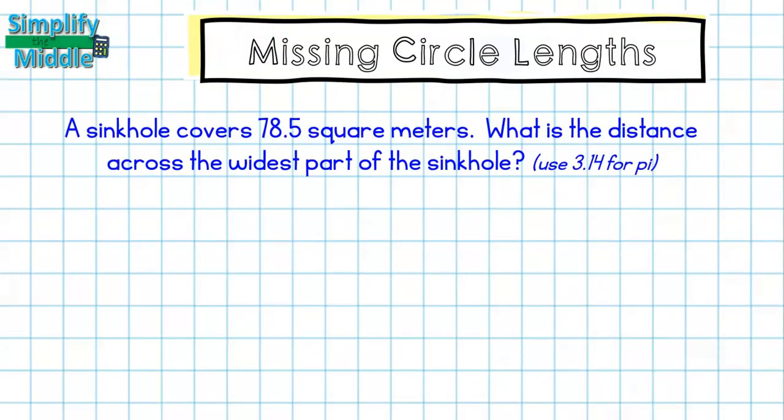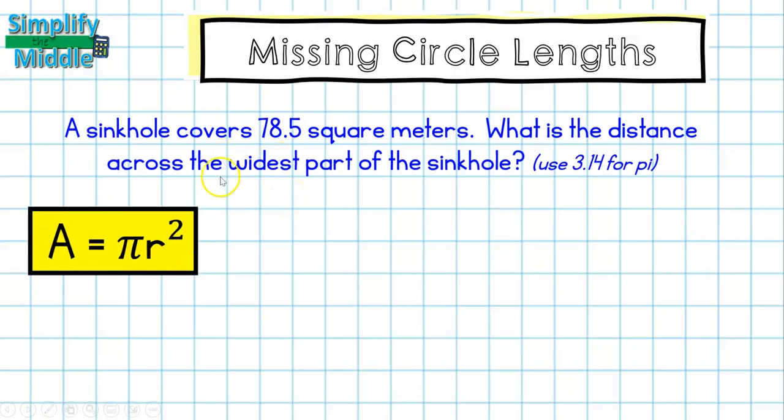And our last problem, a sinkhole covers 78.5 square meters. What is the distance across the widest part of the sinkhole? Use 3.14 for pi. So the distance across the widest part is talking about the diameter. So first I'm going to write out my area formula, area equals pi r squared. I'm going to fill in the information that I know, and then my third step is to divide by pi.